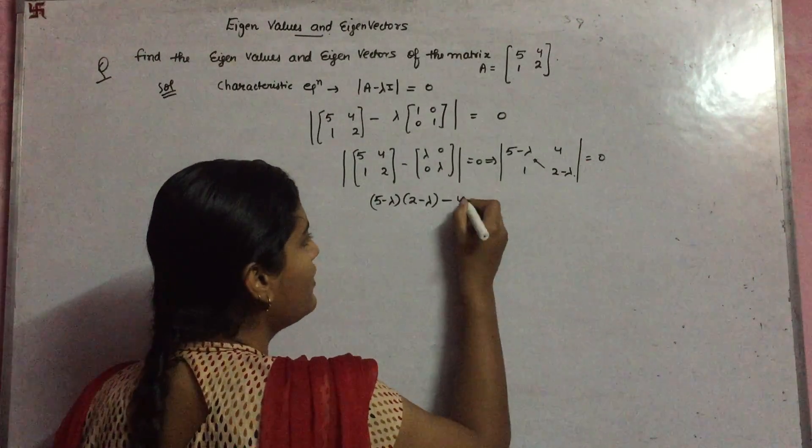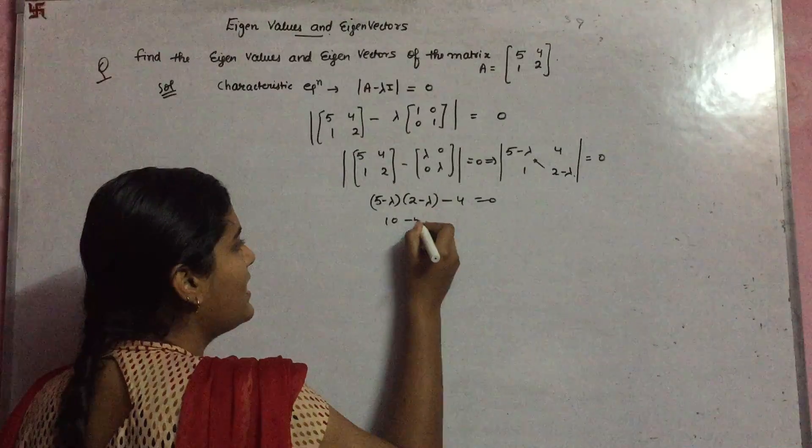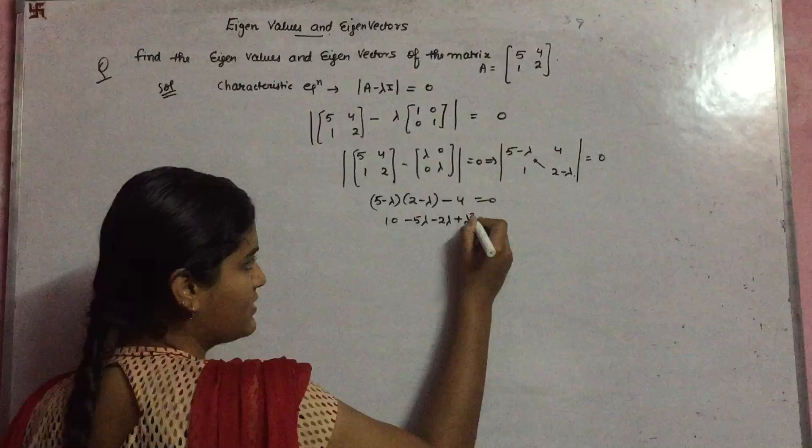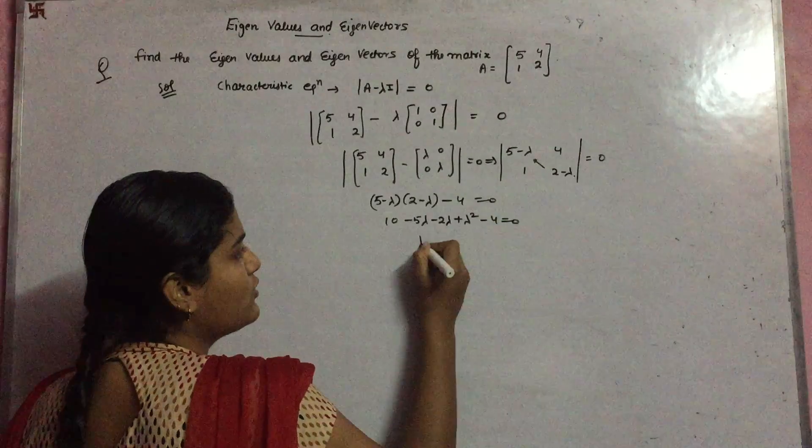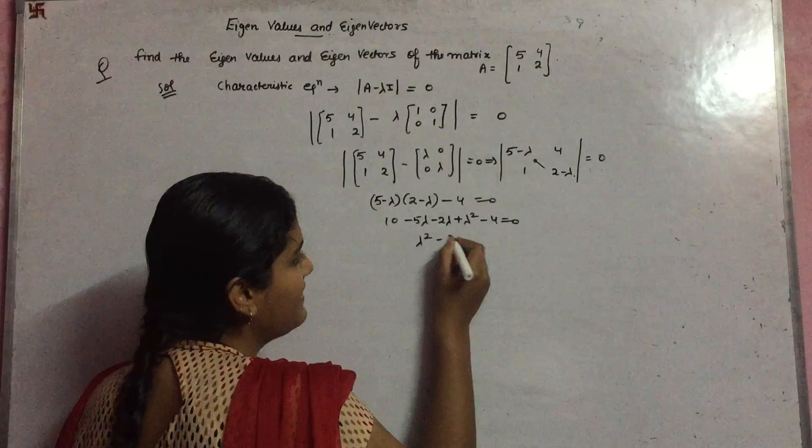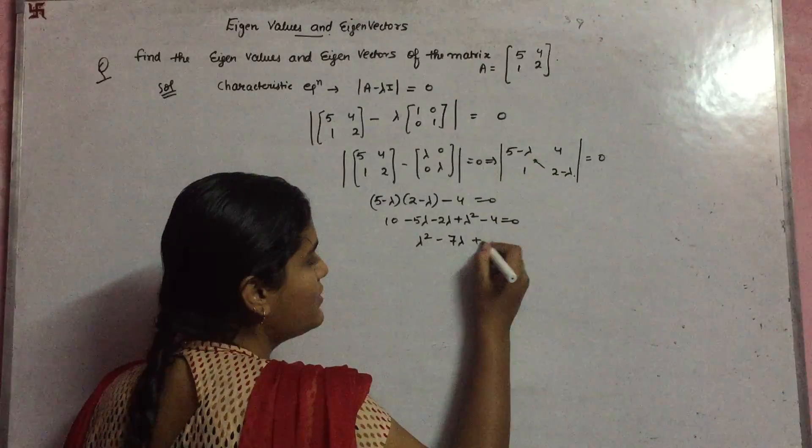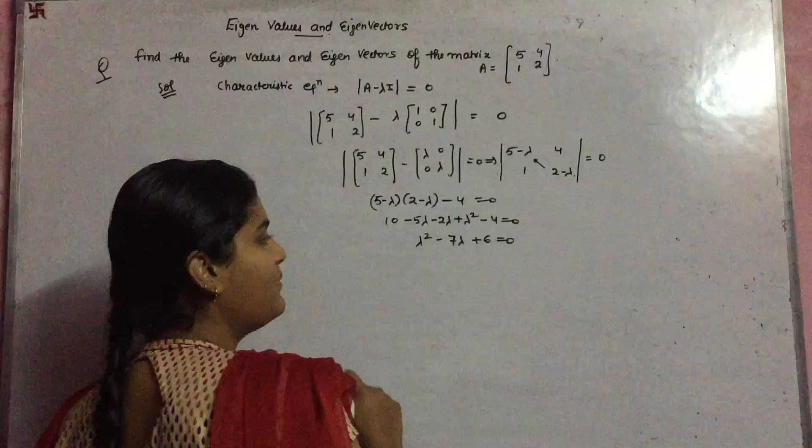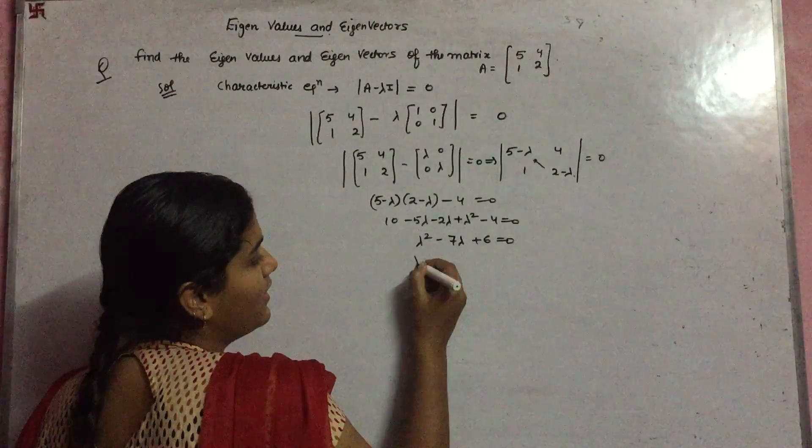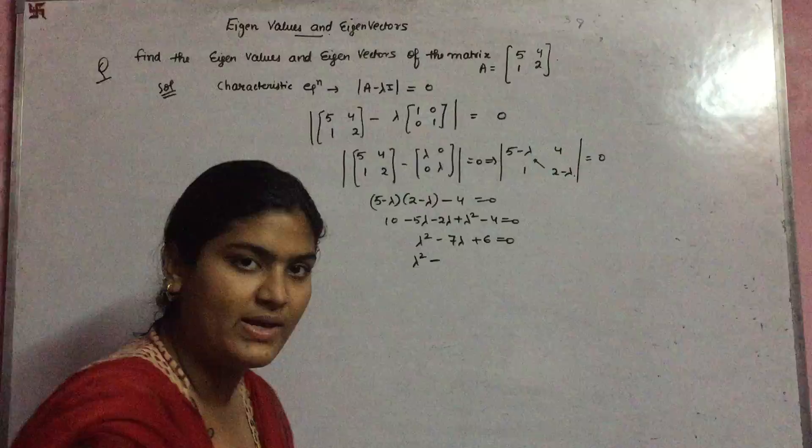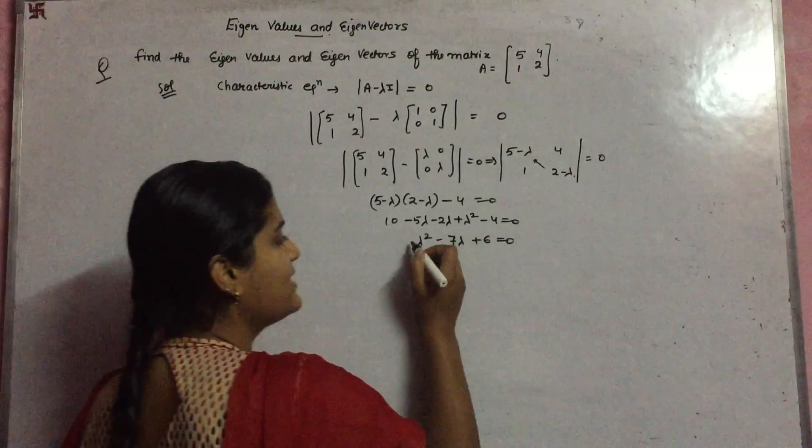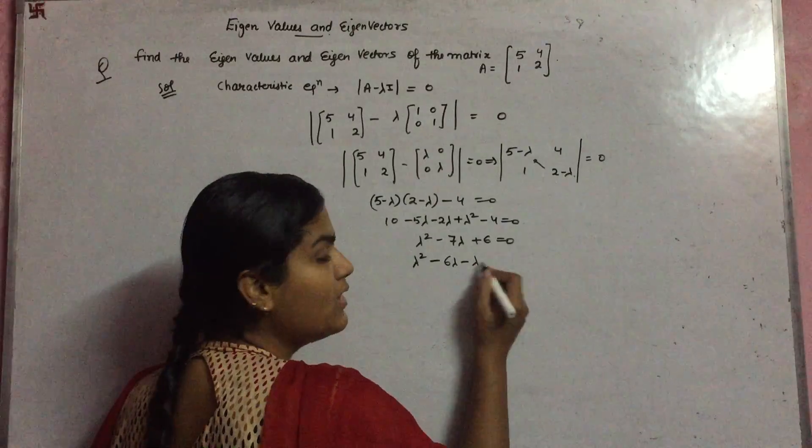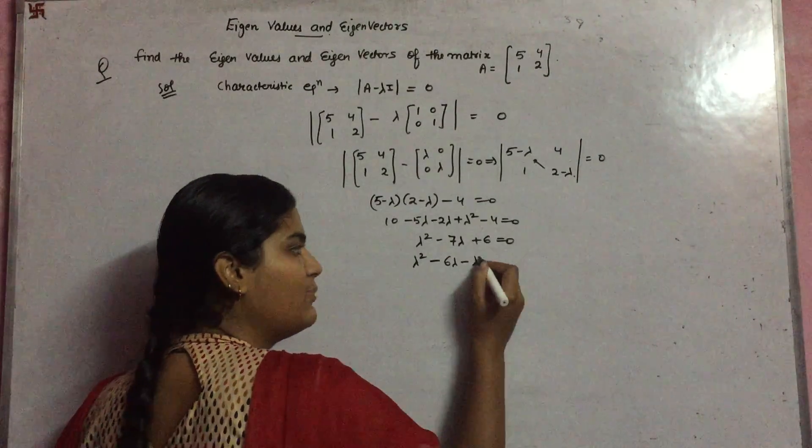This gives us 10 - 5λ - 2λ + λ² - 4. So what do you find? λ² - 7λ + 6. This is your quadratic equation. Now it's very simple to find lambda from it. You just factorize this equation. So 6×1 = 6, you split it into 6 and 1.